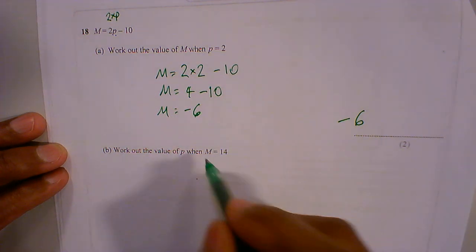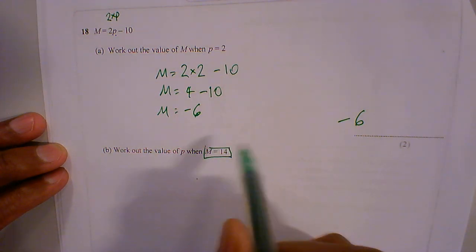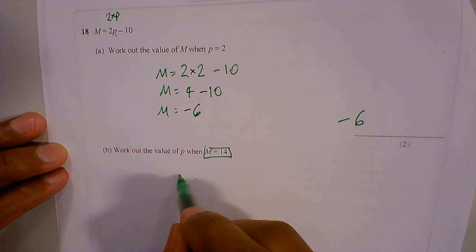but we're going to replace m with 14. So we're going to have m, I'm just going to write it here next to it, so m equals 2p minus 10.